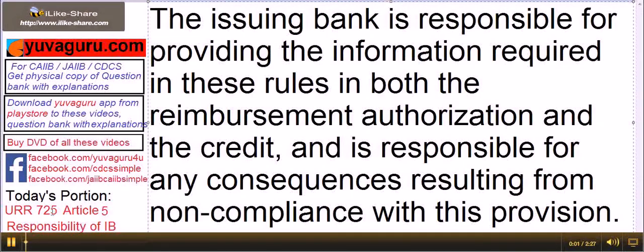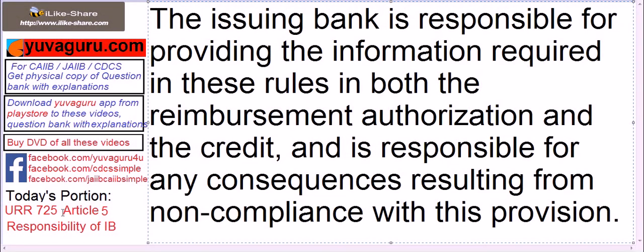Hi friends, let's study Article 5 of URR 725 — Responsibility of the Issuing Bank. The issuing bank is responsible for providing the information required in these rules in both the reimbursement authorization and the credit, and is responsible for any consequence resulting from non-compliance with this provision.